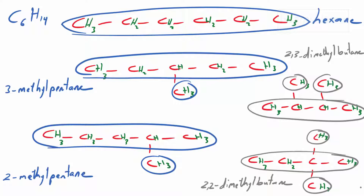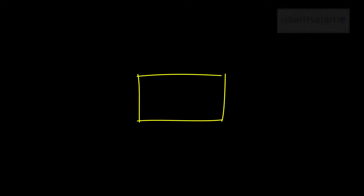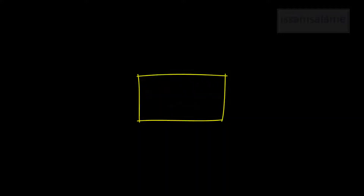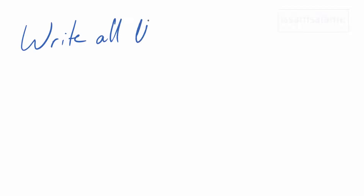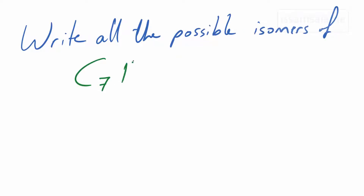If you can find any other possible isomer, please write it in the comments below. Now I want you to try to write all the possible isomers of C7H16 — and please write in the comments how many isomers you could find. Thank you!